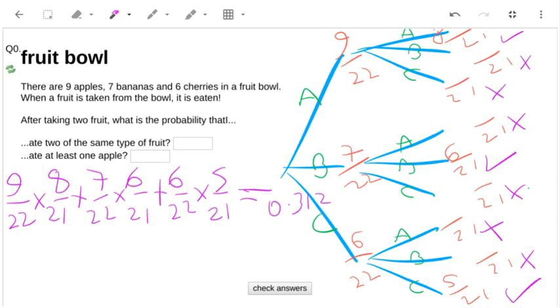For the second part, it is possible to use the same approach, but I just want to look at one different way of doing it. The probability that I ate at least one apple - so I could have had one apple, two apples, or three apples - but what I wasn't allowed for that second part is no apples. So what if we just do one minus the probability of no apples? That might actually be easier.